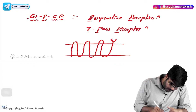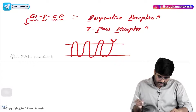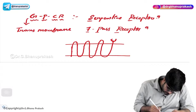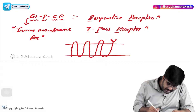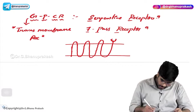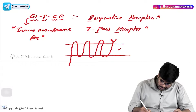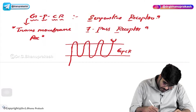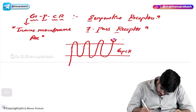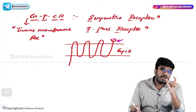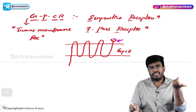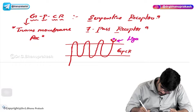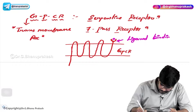The GPCR is also an example of a transmembrane receptor because it passes through the membrane from outside to inside. Now there are two important domains to know. The first domain is the site where the ligand will come and bind — the ligand can be a hormone, a drug, or anything. This is called the ligand binding domain.